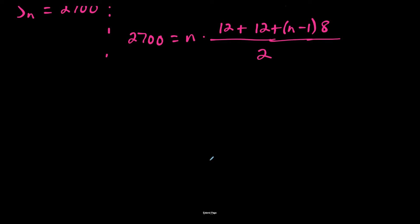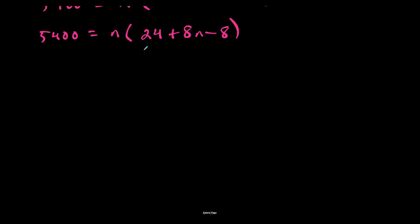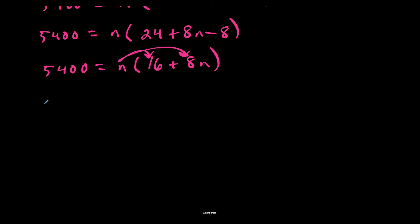Expanding the right side: n times (24 plus 8n minus 8) equals n times (16 plus 8n). Distributing n gives 5400 equals 16n plus 8n squared. Moving 5400 to the right side and rearranging, we get zero equals 8n squared plus 16n minus 5400. We have a quadratic equation.